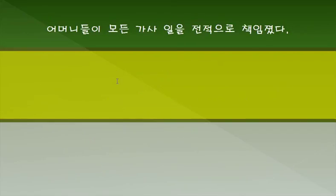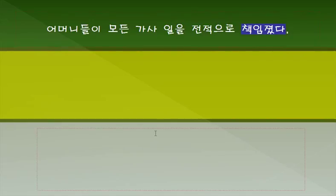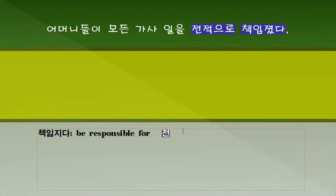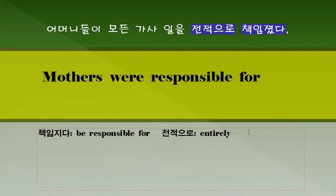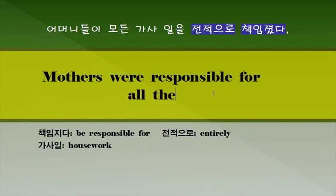두 번째 문장입니다. 어머니들이 모든 가사일을 전적으로 책임졌다. 어머니들이 책임졌다. 책임지다라고 하는 표현: be responsible for. 전적으로라고 하는 표현: Entirely. 문장을 보겠습니다. Mothers, 시제가 과거입니다. 모든 가사일, 가사일은 집안일을 말하는 거죠: housework. All the housework 이렇게 쓸 수 있습니다.